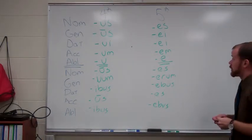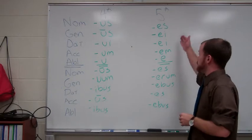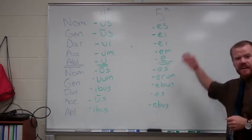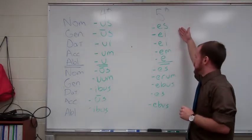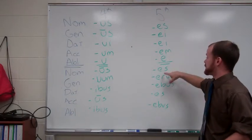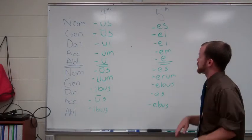So, here are our fifth declension endings. If you had to guess the vowel that was being repeated, you would probably correctly guess E, exactly. We have E's all throughout the whole thing.